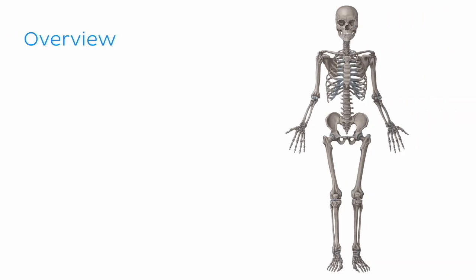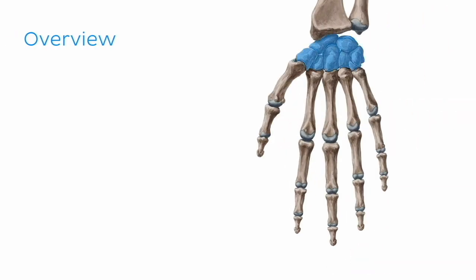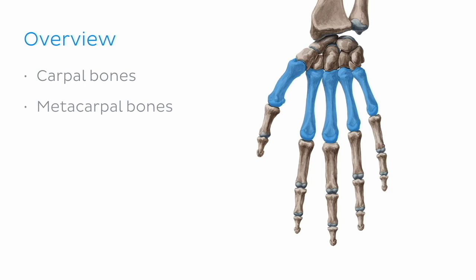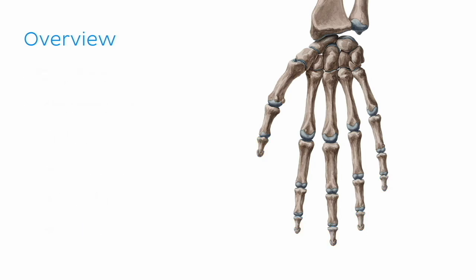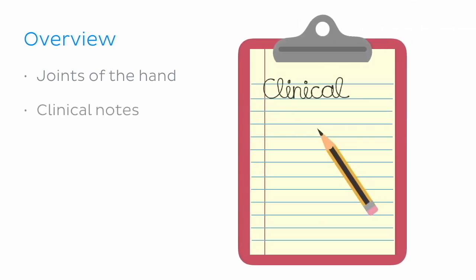Our first stop on our journey through the 27 bones of the hand will be this proximal cluster of eight small bones called the carpal bones, also sometimes referred to as the wrist bones. Next, we'll move a little more distally and explore the five metacarpal bones, which help form the bulk of the structure of the palm of your hand. This will then take us to our last stop, the 14 phalanges, which form the fingers. To make learning these bones a little easier, we'll divide them up into proximal, middle, and distal groups. We'll then look between these various bones to name some important articulations that are found in the hand. At the end of the video, we'll use what we learned and apply it to a relevant clinical scenario that relates to the bones of the wrist and hand.